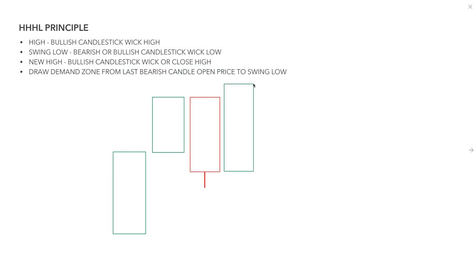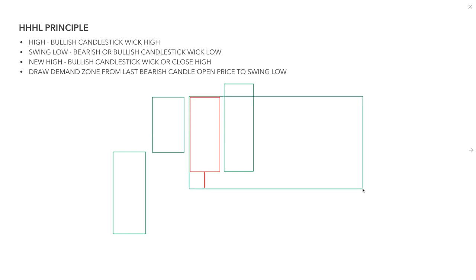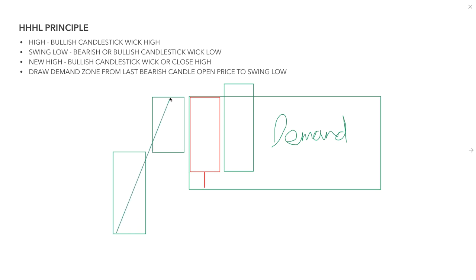We draw the demand zone from the last bearish candle's open price to the swing low. So the demand zone goes from the last bearish candle's open price at the top to the swing low at the bottom - that whole zone is demand. This is because of the higher high higher low principle: we get a move up, then a move down, then a move higher.